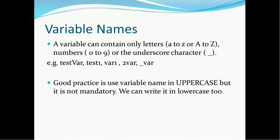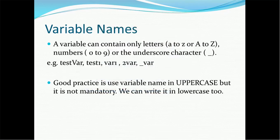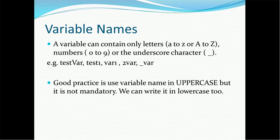Let's start with variable names. A variable is a simple term common across all technologies — variables are normally declared to store temporary information or for longer-term use. A variable can contain only letters ranging from small 'a' to small 'z' or capital 'A' to capital 'Z', numbers from 0 to 9, or the special character underscore. Sample valid variable names include: test, test_var, test1, var1, var2, var_underscore_var.